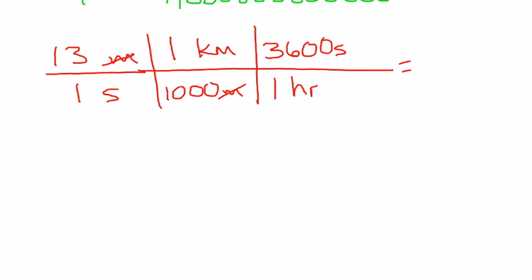and there's 3,600 seconds in an hour. If we run that through the calculator, again, our units cancel here, 13 divided by a thousand times 3,600, you should get 46.8 kilometers per hour.